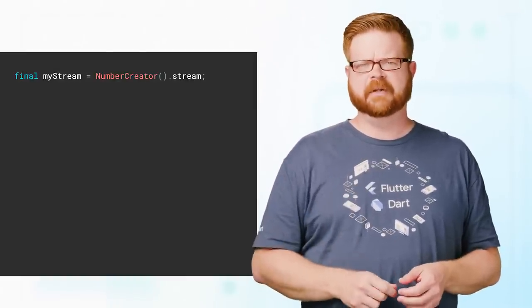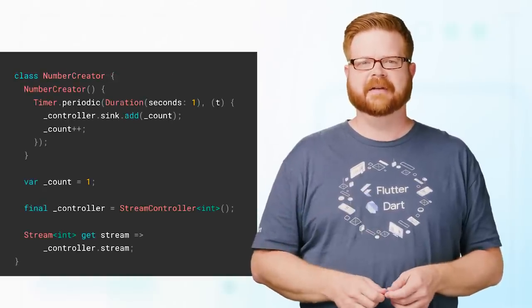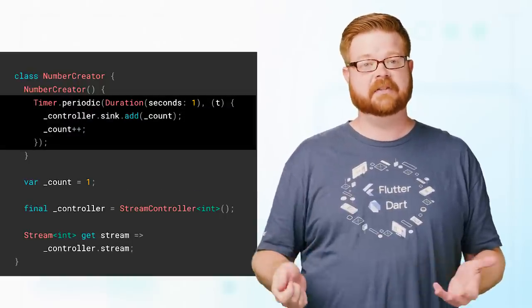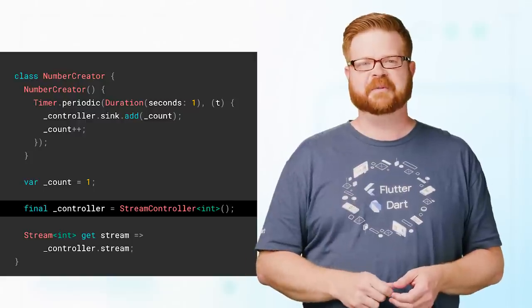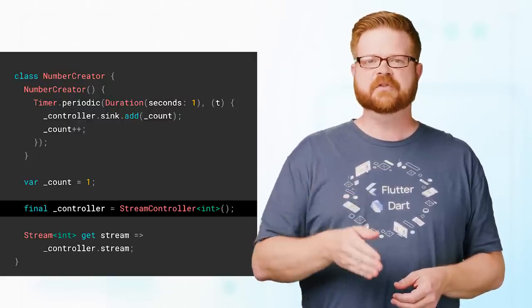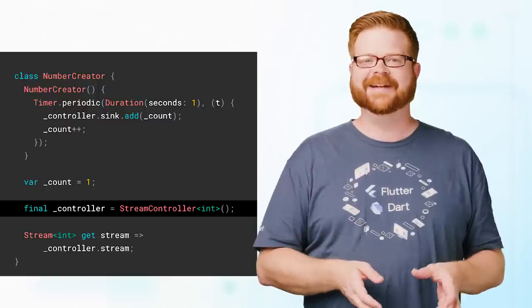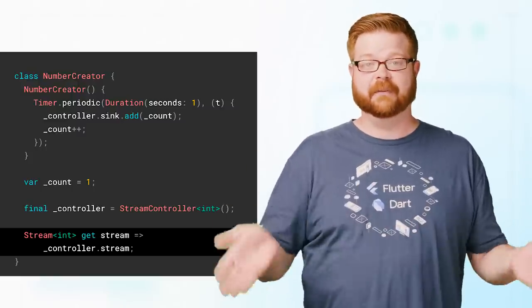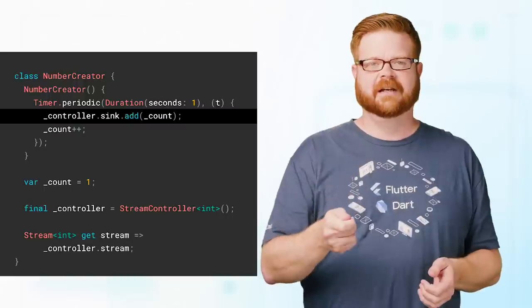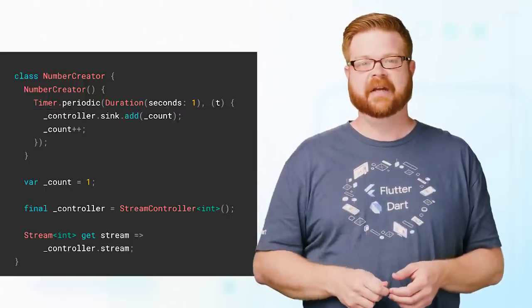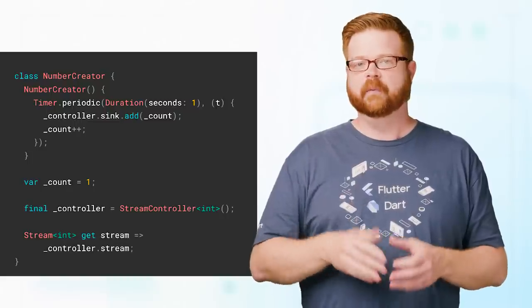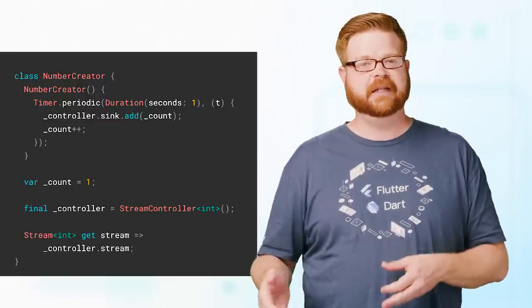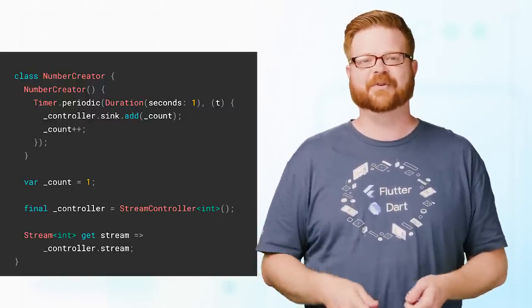Let's go back to that number creator we've been using so far. Here's the actual code for it. As you can see, it keeps a running count, and it uses a timer to increment that count each second. The interesting bit, though, is this stream controller. A stream controller creates a brand new stream from scratch and gives you access to both ends of it. There's the stream end itself, where data arrives. We've been using that one throughout this video. And there's the sync, which is where new data gets added to the stream. Number creator here uses both of them. When the timer goes off, it adds the latest count to the controller's sync, and then it exposes the controller's stream with a public property so other objects can subscribe to it.